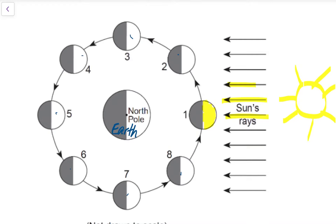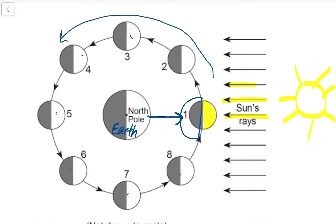So if you're on earth here and you're looking up at the moon, you only see this half of the moon — it's totally dark. You would not see any of the lit up portion of the moon. As the moon revolves around the earth, more and more of the lit up portion of the moon can be seen — here's just a little crescent moon.